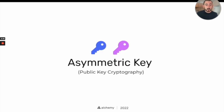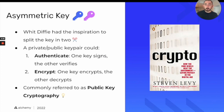Now let's talk about asymmetric key cryptography, more commonly referred to as public key cryptography. Asymmetric key cryptography was born of an inspiration by a cryptographer known as Whit Diffie. Whit Diffie had this idea to split the key in two, which was considered heresy in the field of cryptography.